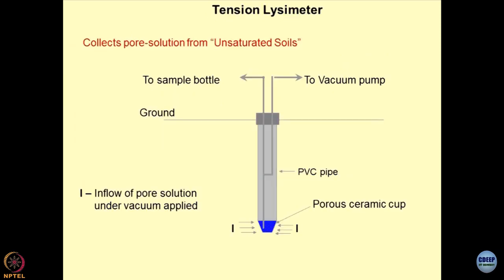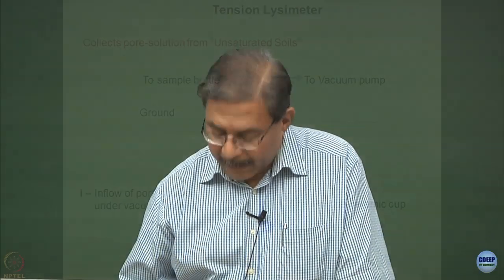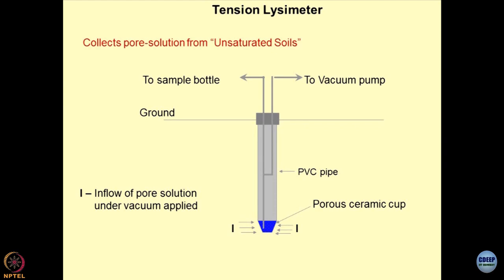Until now we have been talking about saturated systems of soils, zero tension lysimeters. Now I would like to show you how tension lysimeters look like. Primarily they are used for unsaturated soils where you do not allow ingress of water happening in the soil mass.